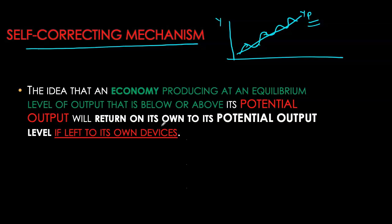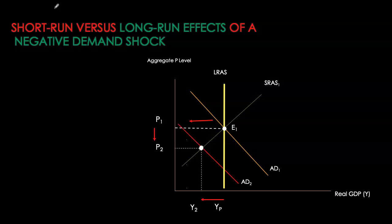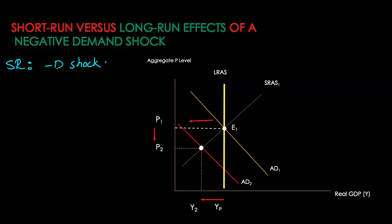The aggregate demand-aggregate supply model very neatly describes how this transpires. Remember, whenever there's an output gap, it's your wages and short-run aggregate supply curve which will respond to that output gap and adjust accordingly in order to close that output gap eventually in the long run. Let's do an example. I'm going to assume there is a negative demand shock. With the negative demand shock, both price level and GDP have gone down, and unemployment is now much higher than before.